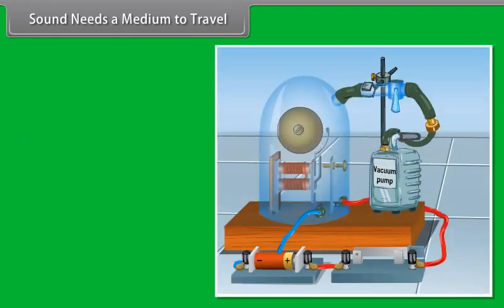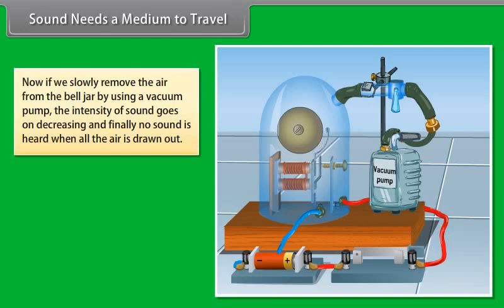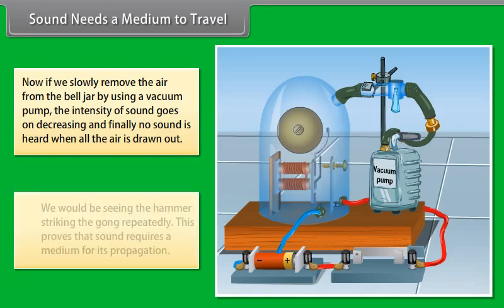Look at this figure. Here, an electric bell is suspended inside an airtight glass bell jar connected to a vacuum pump. As the electric bell circuit is completed, the sound is heard. Now, if we slowly remove the air from the bell jar by using a vacuum pump, the intensity of sound goes on decreasing. And finally, no sound is heard when all the air is drawn out. We would be seeing the hammer striking the gong repeatedly.